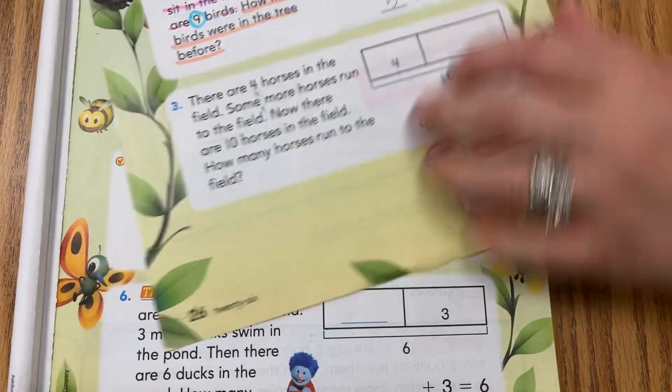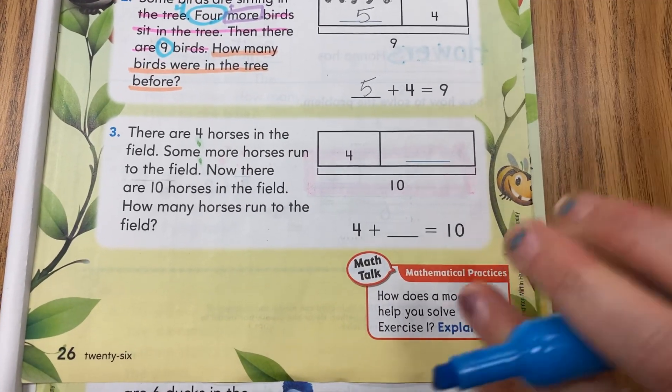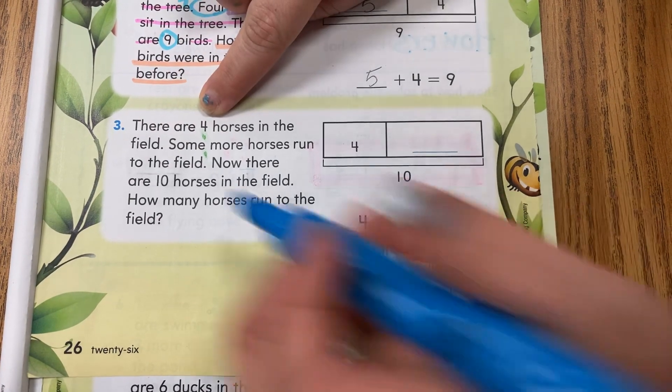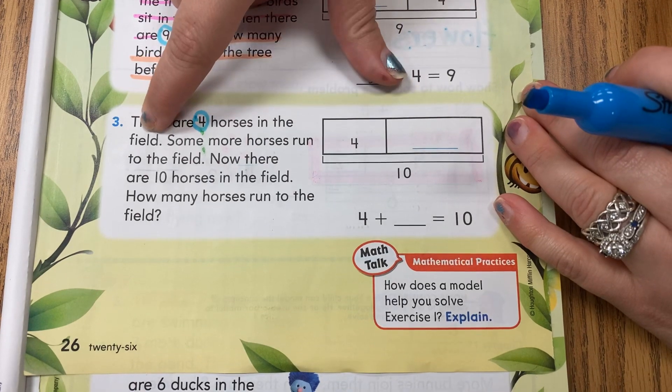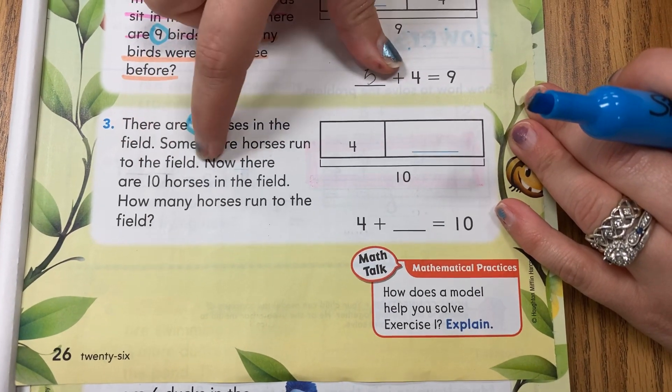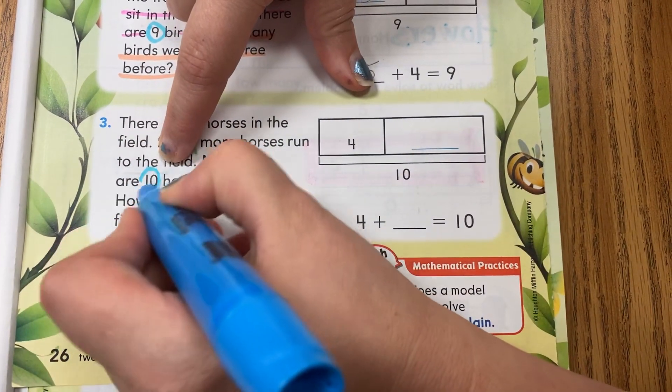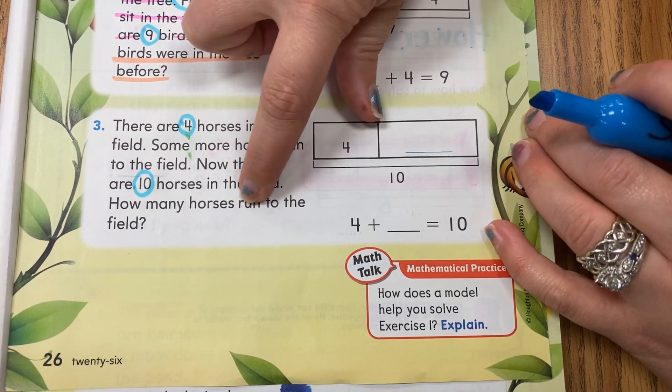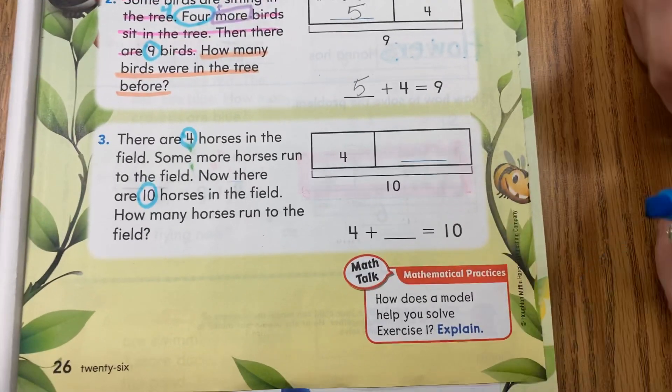All righty. We're going to try this one, and I'm going to have you guys do a couple parts. Starting with your blue, get out your colors, my friends. Let's read it together, read with me, fingers tracking: There are four horses in the field. Some more horses run to the field. Now there are ten horses in the field. How many horses run to the field?